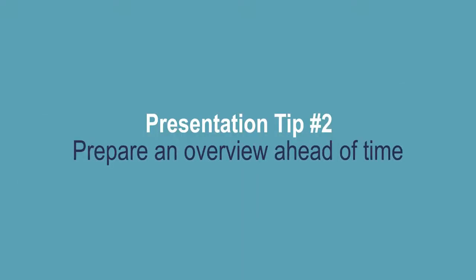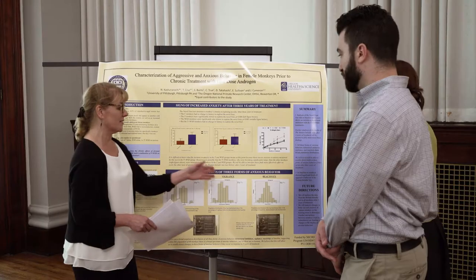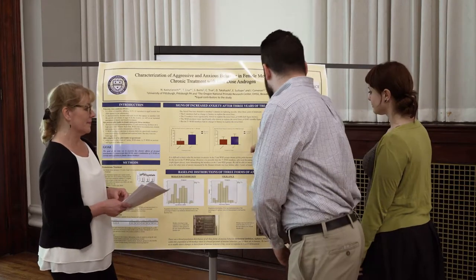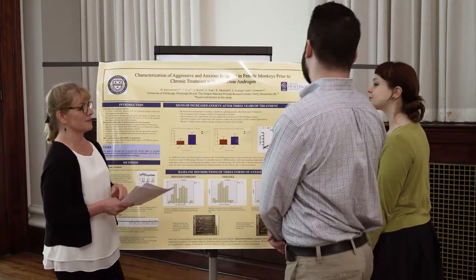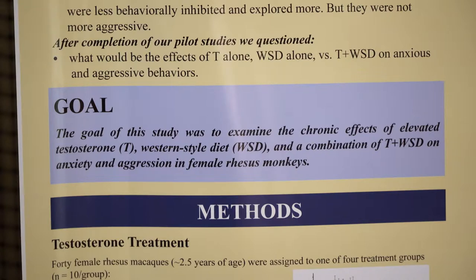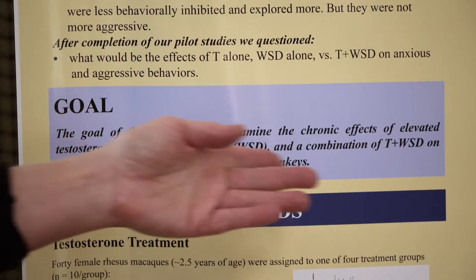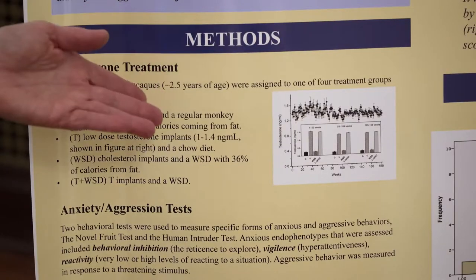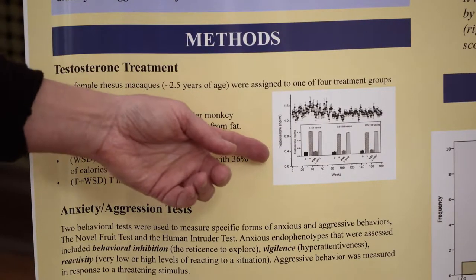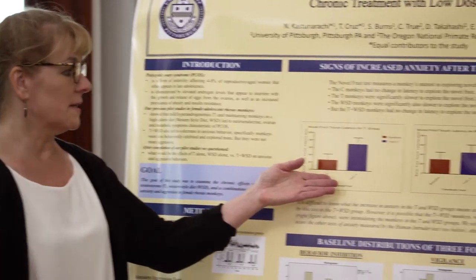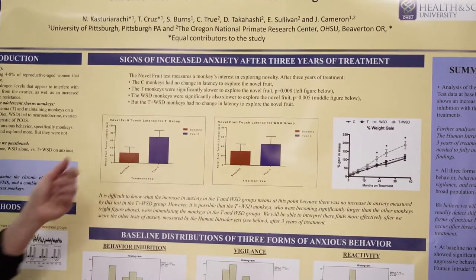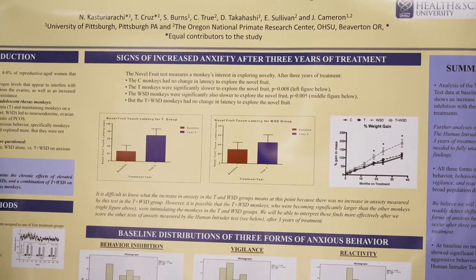Prepare how you will provide a brief overview of your poster ahead of time. Develop and practice a two-minute overview of the poster — keep it clear, interesting, and brief. This usually includes the goal of the study. You will want to point to the goal section of your poster as you are saying the goal. For methods, give just enough so that the viewer can understand the results. In the key findings section, explain what the results were and what they mean.